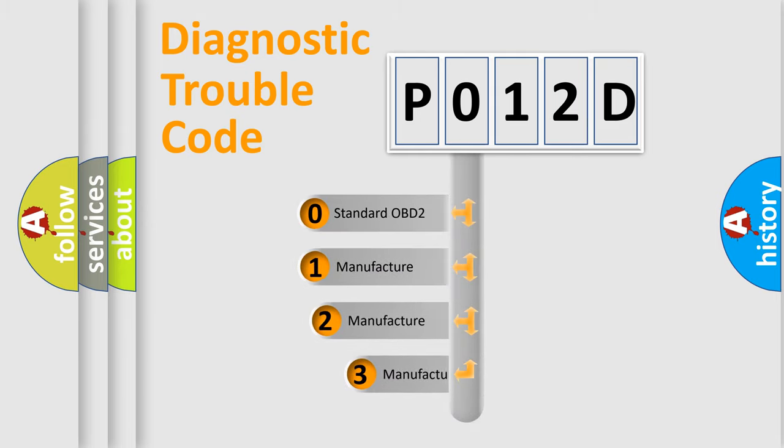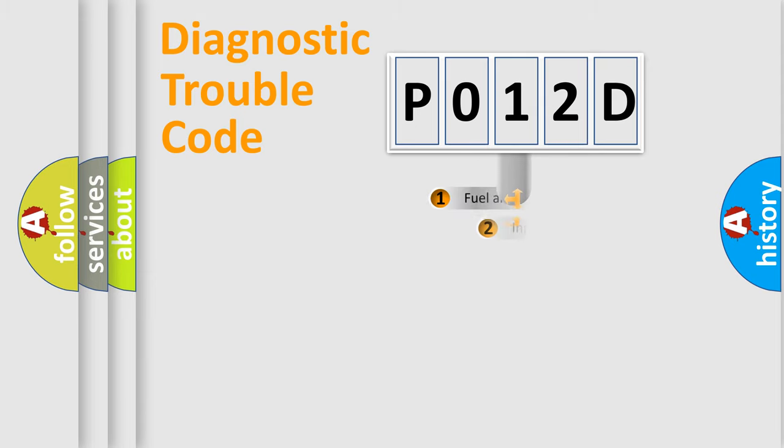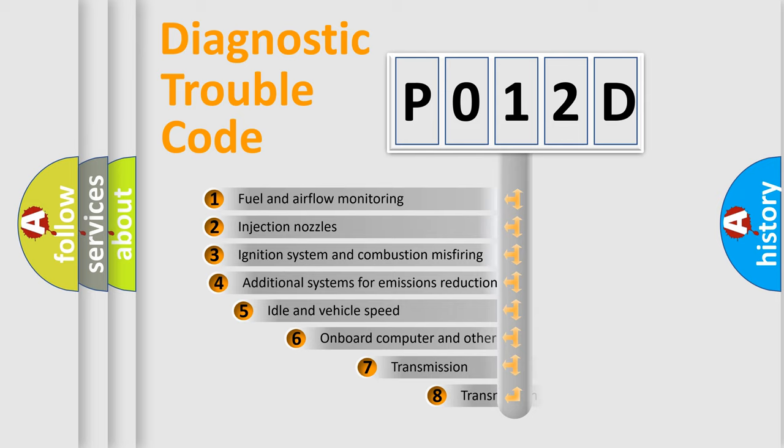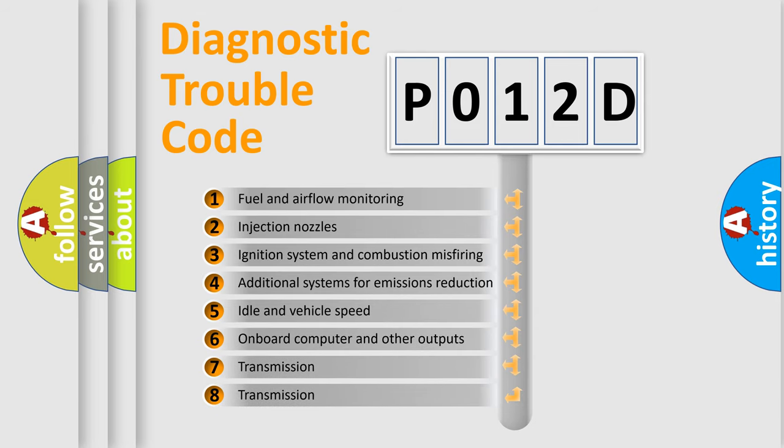If the second character is expressed as zero, it is a standardized error. In the case of numbers 1, 2, 3 it is a car-specific error.